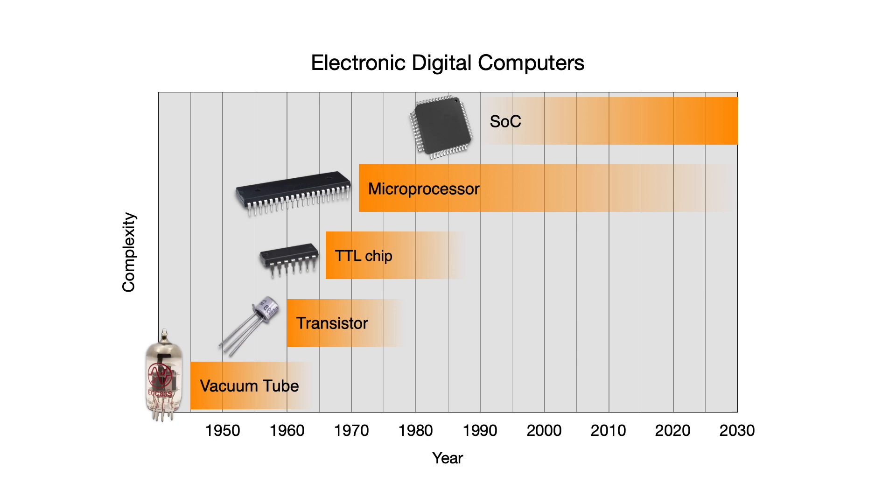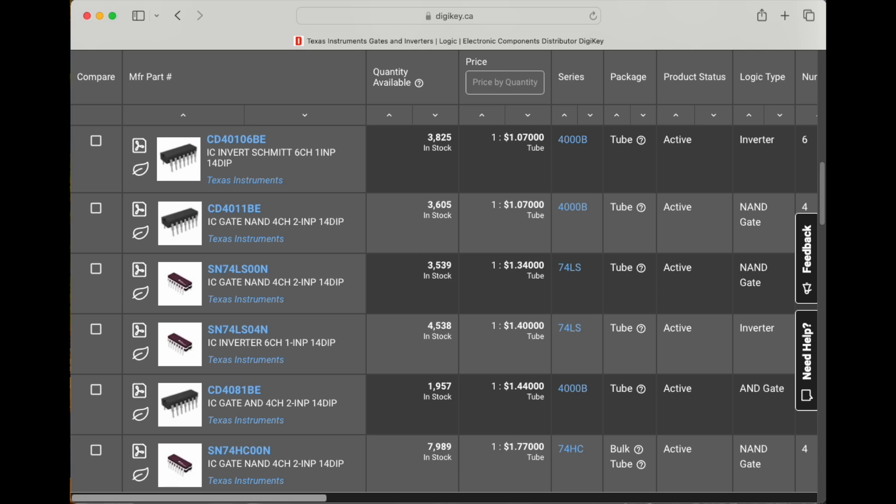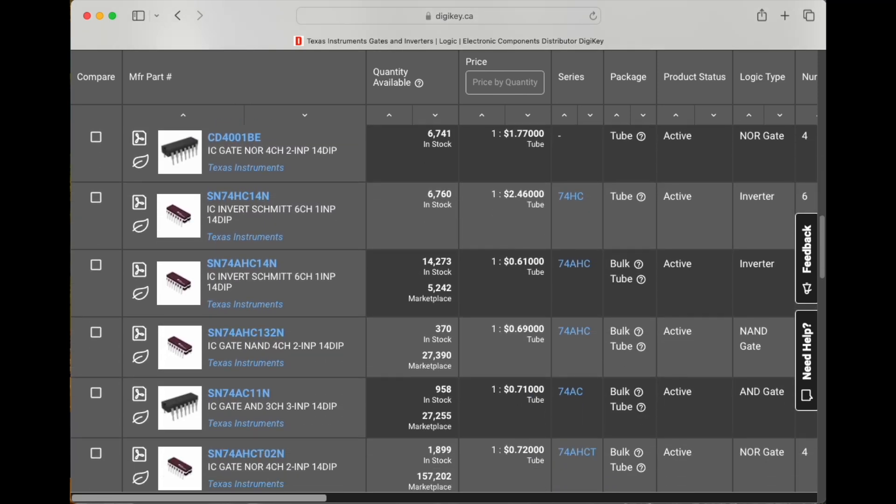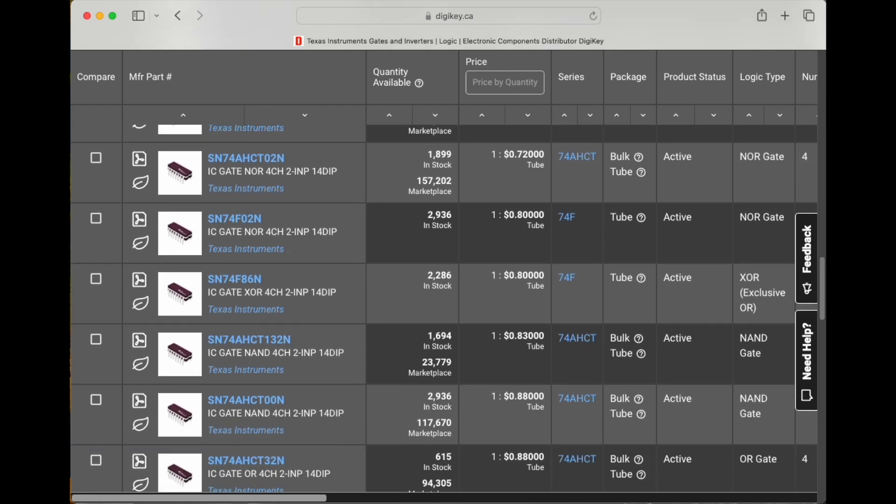One potential difficulty was parts availability. Fortunately, most of the TTL chips needed are still being manufactured and are readily available. A few chips were not available, but I found online suppliers who stockpile obsolete chips, so I was able to source everything needed to build my TTL computer.